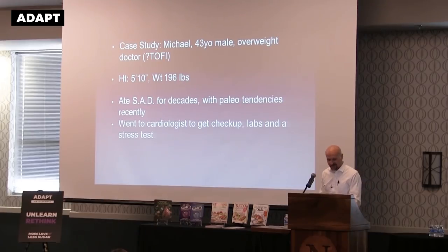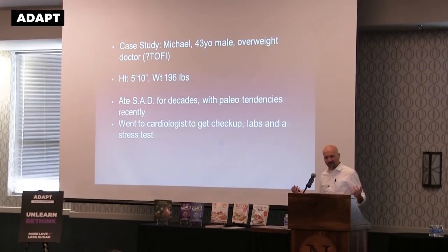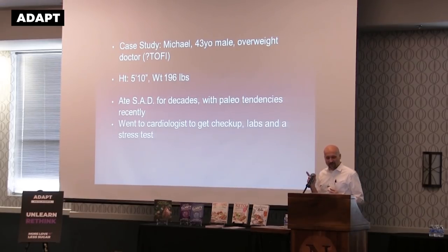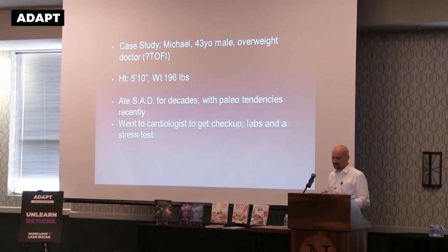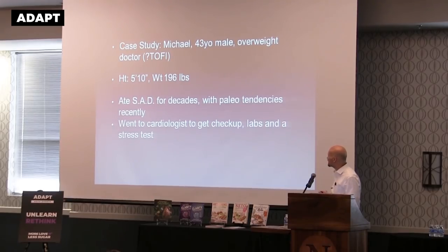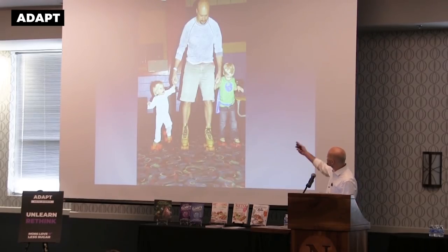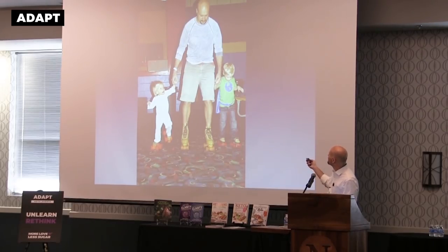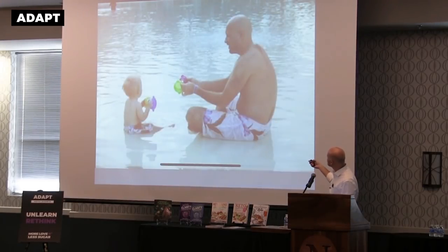Here's a case study — this is kind of fun. This guy's name is Michael. He's a 43-year-old overweight doctor — foreshadowing: he's 48 now. He's 5'10", 196 pounds, ate the standard American diet for decades with recent paleo tendencies. A few years ago he went to a cardiologist for a checkup — labs and a stress test. He doesn't look too overweight, and he might look a little familiar.